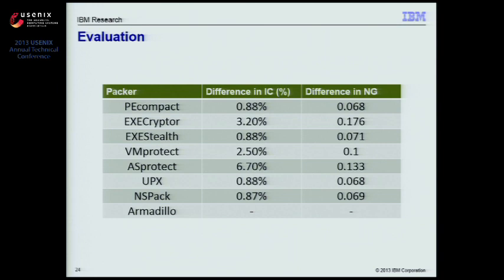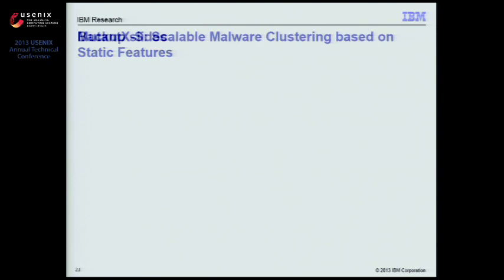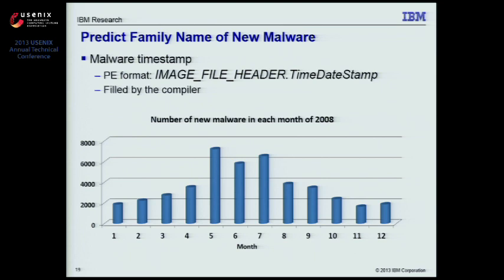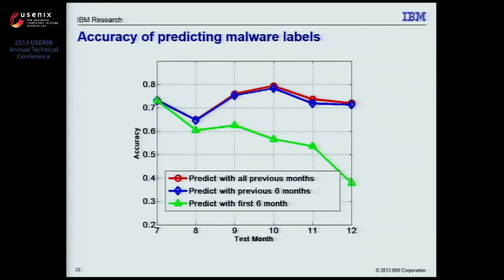Question from audience: In the evaluation slide showing accuracy, there was actually a drop from month seven to month eight. Do you have an intuition for why that would happen? We haven't investigated that specifically, but I would expect maybe there are some new types of malware or new malware families showing up that we don't have any history for — that's why there is a drop. After we include month eight into our dataset, we're able to keep up with the development of new malware samples.